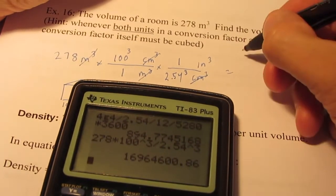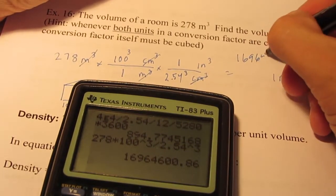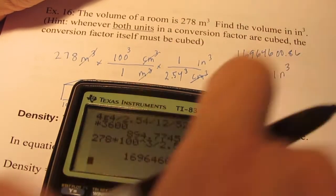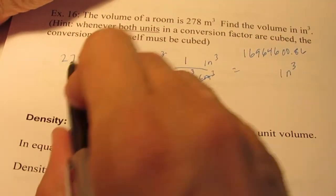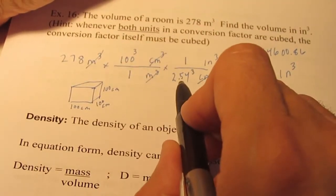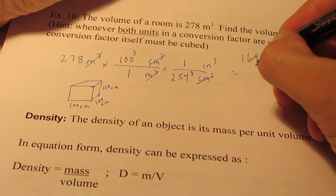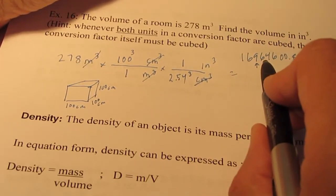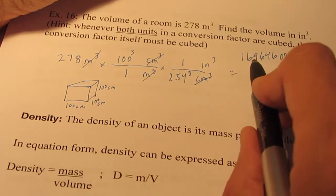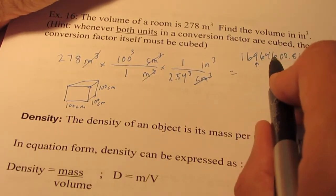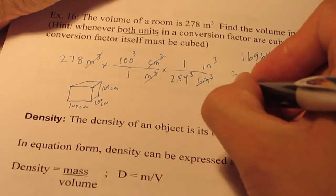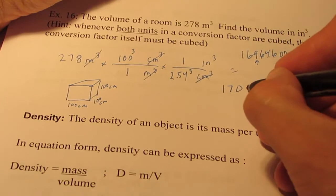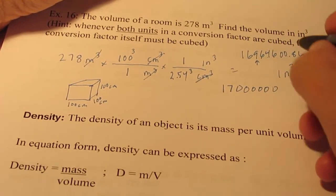Now this is an ugly number: 1,696,460.86. We're only allowed 3 significant figures here. I have to round this off. The number next to it is a 6, so I'm going to round this off to 170 with a bunch of zeros after it.